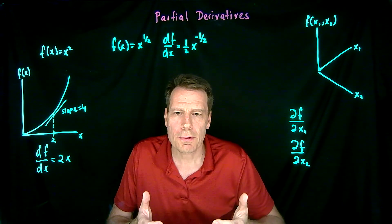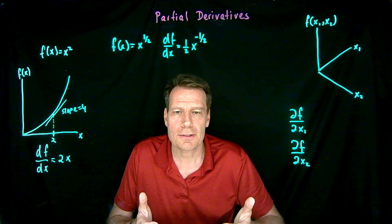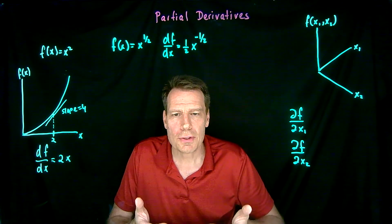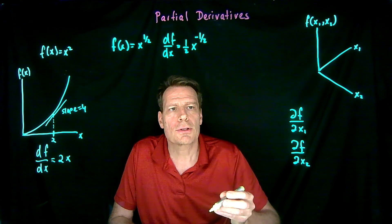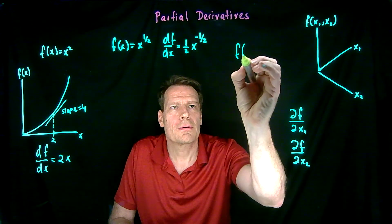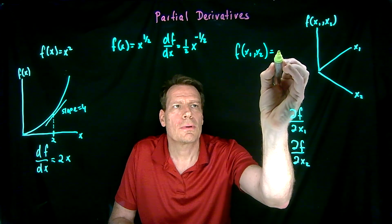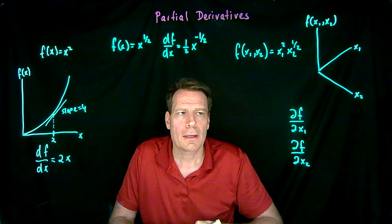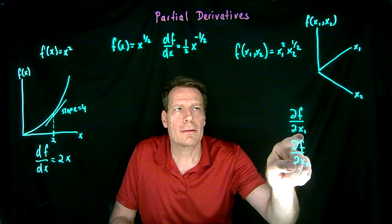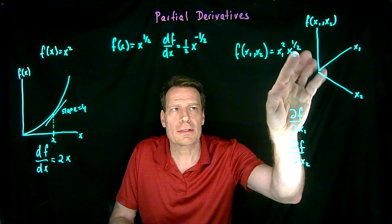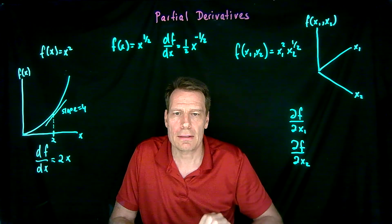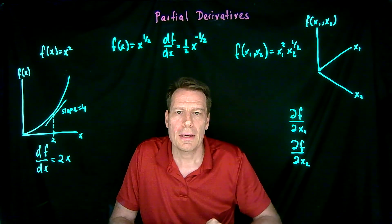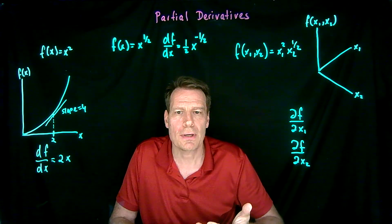So now that you've seen that partial derivatives are just derivatives of slices of multivariable functions that hold the other variables fixed, we can go back and say how do you actually take those derivatives? Let's review. Suppose that we have a function f of x1, x2 equal to x1 squared times x2 to the 1 half. If we then take the partial derivative with respect to x1, we have to hold x2 fixed as if it was just a number — we don't do anything with that, we just leave it alone — and we treat that function as if it was just a function of that one variable.